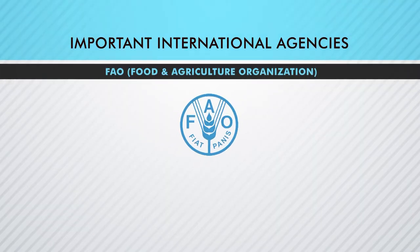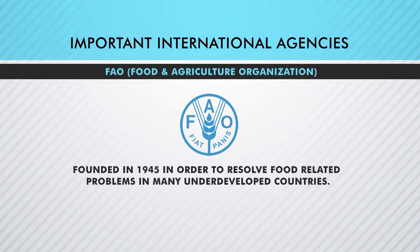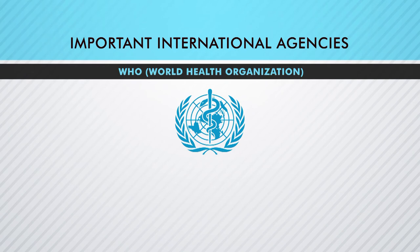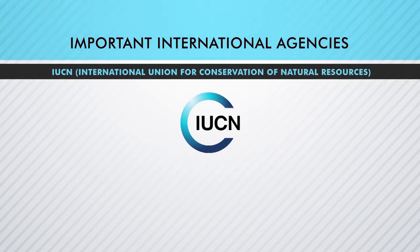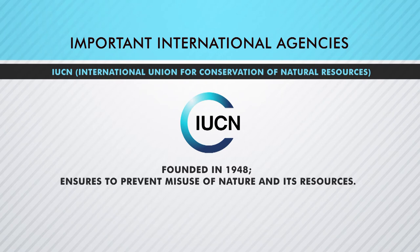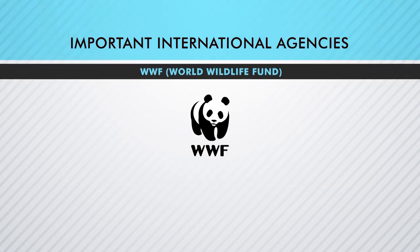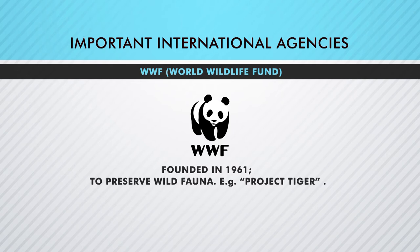One such organization is FAO — Food and Agriculture Organization — founded in 1945 to resolve food-related problems in many underdeveloped countries. Then the World Health Organization, WHO, established in 1946, takes responsibility for health-related work all over the world, helping countries in family planning, polio, tuberculosis, etc. Then there is IUCN — International Union for Conservation of Natural Resources — established in 1948, whose role is to prevent the misuse of nature and its resources. Then there is WWF — World Wildlife Fund — established in 1961, whose main work is to preserve wild fauna. In India, Project Tiger was funded by WWF for a long time.